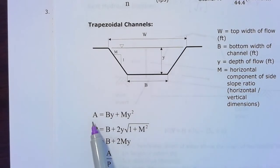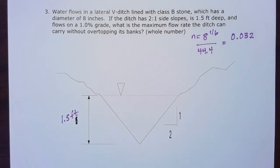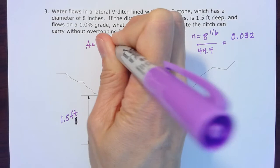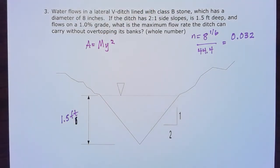For instance, in our area, if our B equals zero, area is just going to equal MY squared. For our perimeter, our wetted perimeter, if it's a V-ditch, again B equals zero, so wetted perimeter just equals 2Y times the square root of one plus M squared. And then, same as trapezoidal channels, hydraulic radius equals area over wetted perimeter. For the area for this V-ditch, we're just going to use MY squared because there is no base width.